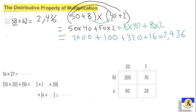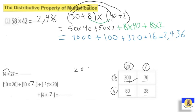The next question: fourteen by twenty-seven. The diagram shows the area model — fourteen is ten and four, twenty-seven is twenty and seven. So: ten by twenty equals two hundred, ten by seven equals seventy, four by twenty equals eighty, four by seven equals twenty-eight. For the distributive property form: ten by twenty plus ten by seven, then four by twenty plus four by seven. Two hundred, seventy, eighty, and twenty-eight.